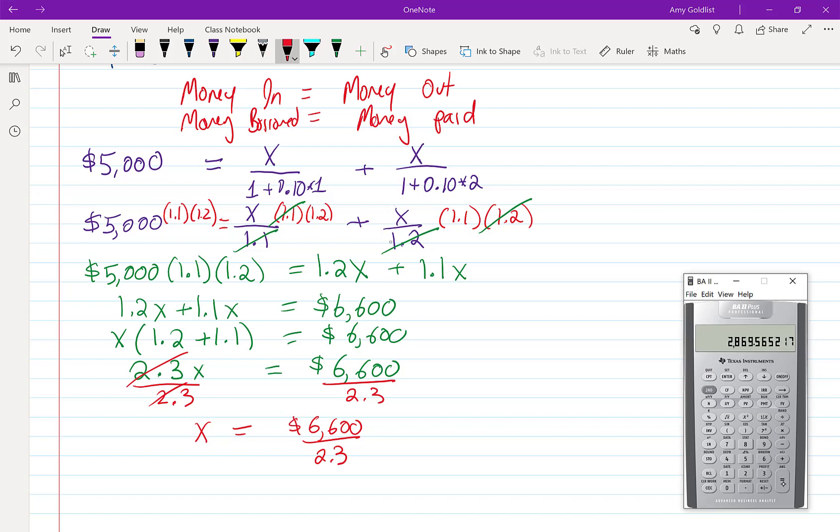6,600 showing up on my calculator divided by 2.3 and I get $2,869.57, remembering to round up.